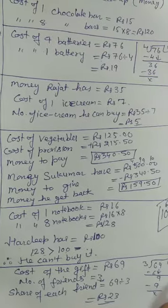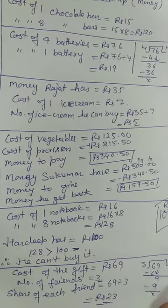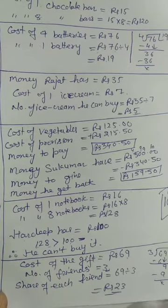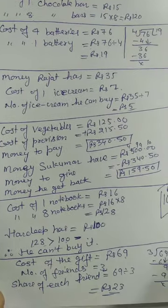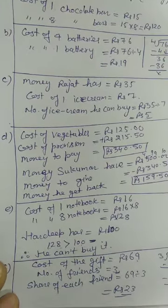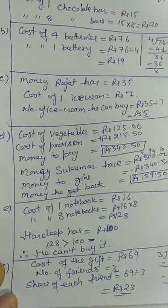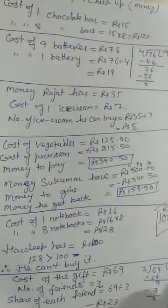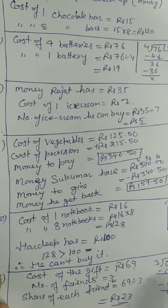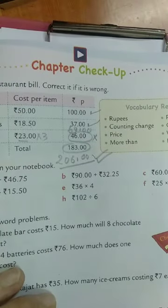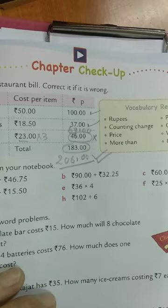Practice this chapter, especially the word problems. Remember: if the cost of one is given and many is required, multiply. If the cost of many is given and one is required, divide. One to many — multiply; many to one — divide. Do question 2 in your notebook and other exercises in the book. You can pause the video to see page 193 and complete the chapter. Thanks for watching — try to do it!